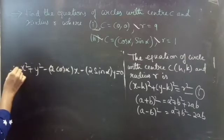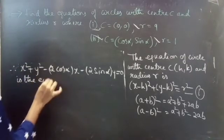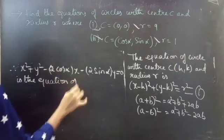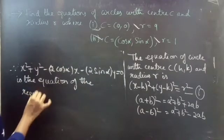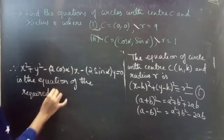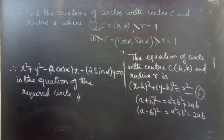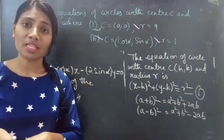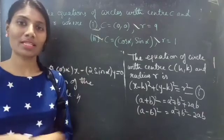Therefore, X² + Y² − 2 cos α · X − 2 sin α · Y = 0 is the equation of the required circle. We have seen two problems from circles in this video. Hope you understood. See you in the next video. Bye-bye.